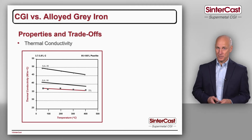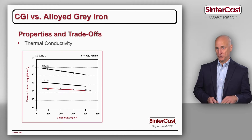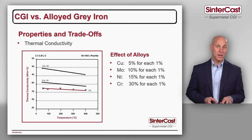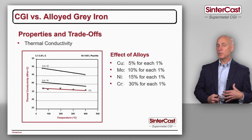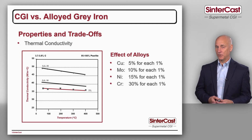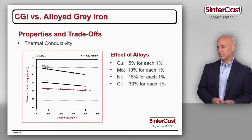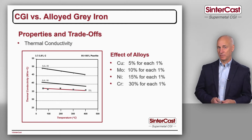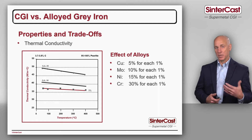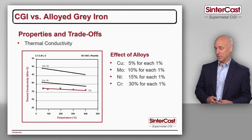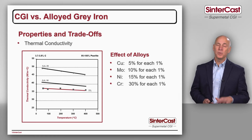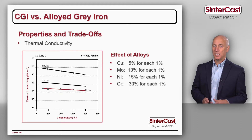We can explain this reduction in thermal conductivity from grey iron to alloyed grey iron. Here in the overhead, we see a comparison for iron and steel showing that when we add 1% of an alloying element, how much will the thermal conductivity decrease. For example, adding 1% of copper will reduce the thermal conductivity by 5%, molybdenum at 1% will reduce it by 10%, and chrome is the big hitter — adding 1% of chrome reduces the thermal conductivity by 30%.